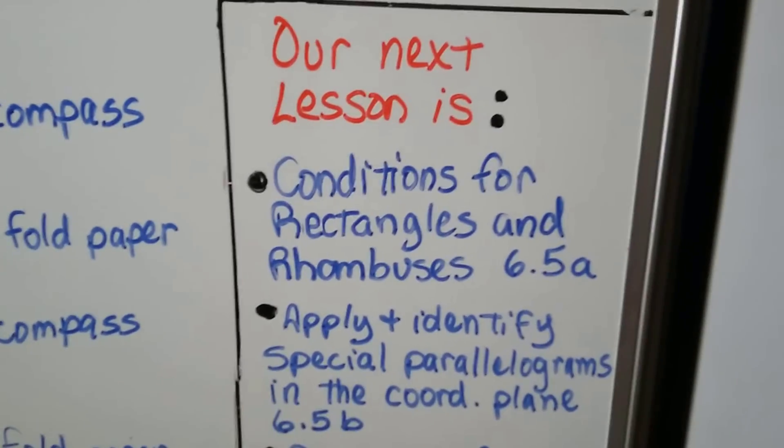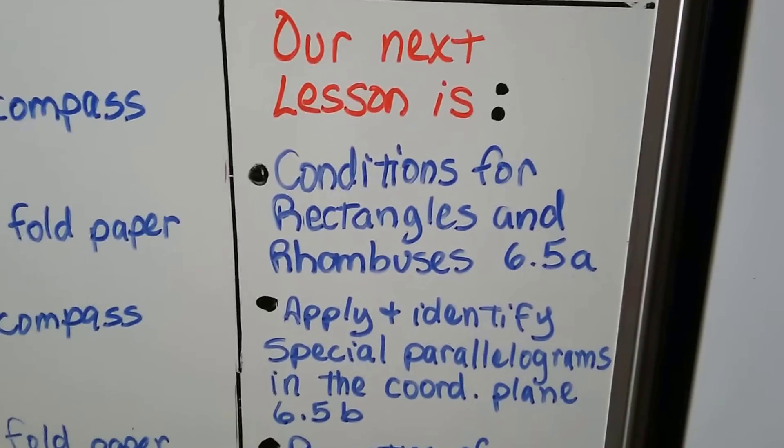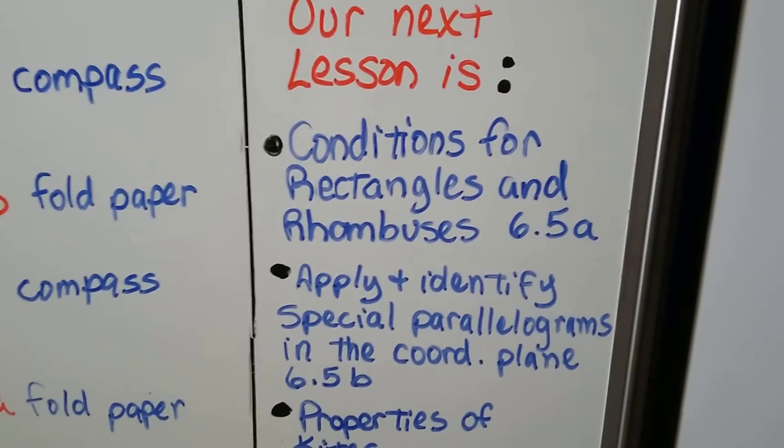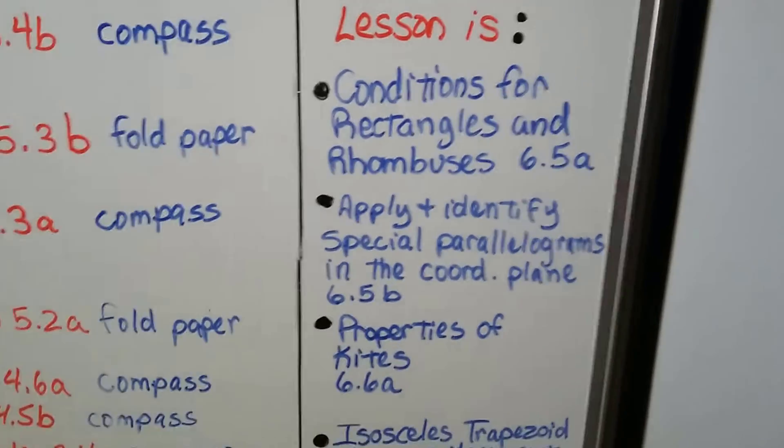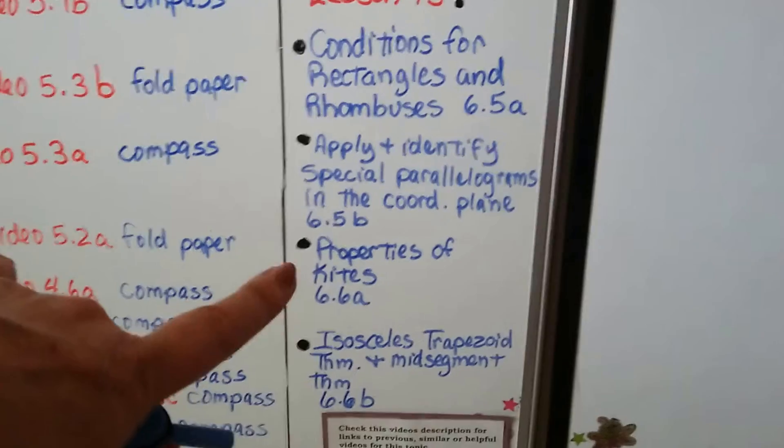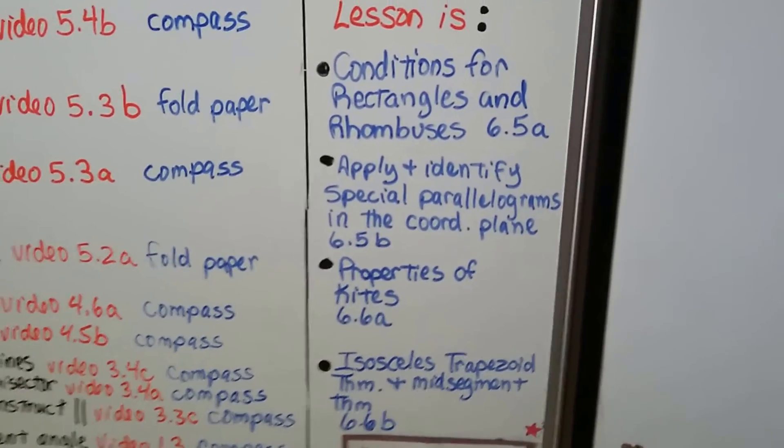Our next lesson is 6.5a. It's going to be conditions for rectangles and rhombuses. After that, we're going to apply and identify special parallelograms in the coordinate plane for the rest of 6.5. Then we're going to get into 6.6 and talk about kites and isosceles trapezoids.